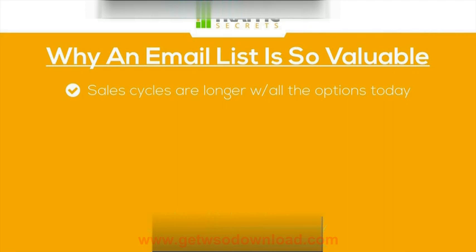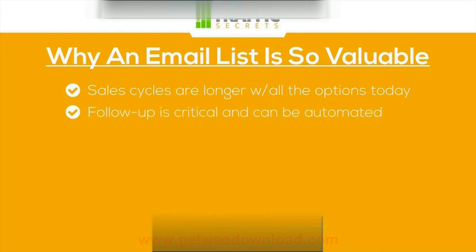The first reason: sales cycles online are now longer. With all the options people have today, several years ago we'd see more people buying in the first 24 hours than we do today. Some people now take two, three, four, or even five days or a week before they buy. So we need that email list — we need permission to email them, to keep following up and telling them why they need what we sell.